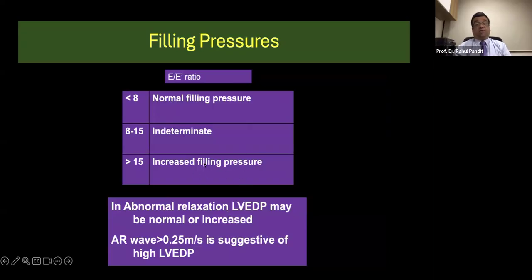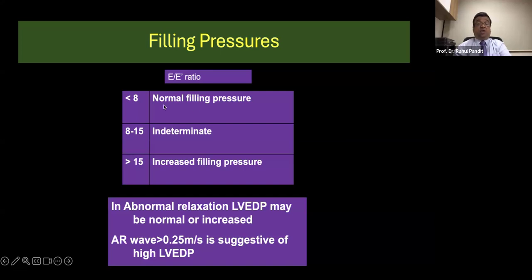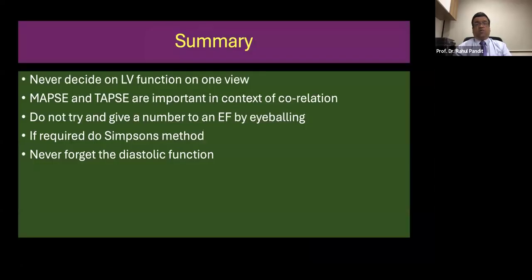But if your E upon E prime ratio is less than 8 it's got normal filling pressures. So I believe that this is a very reasonable way of diagnosing diastolic dysfunction and you can understand it quite well.